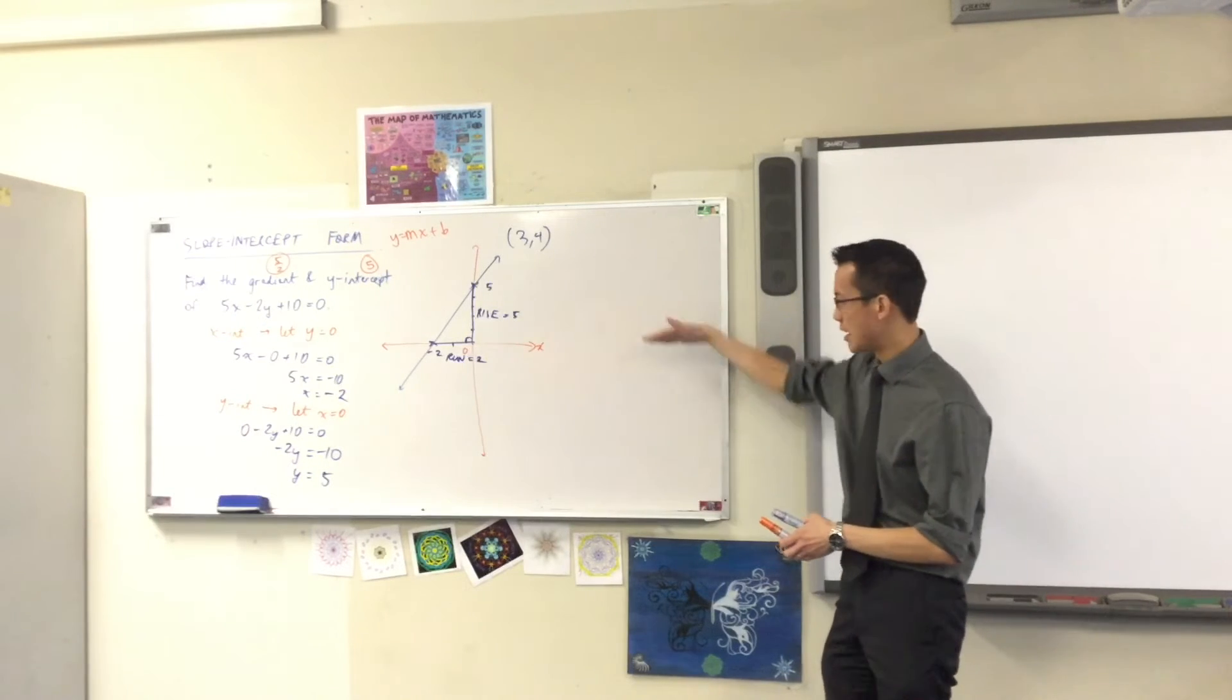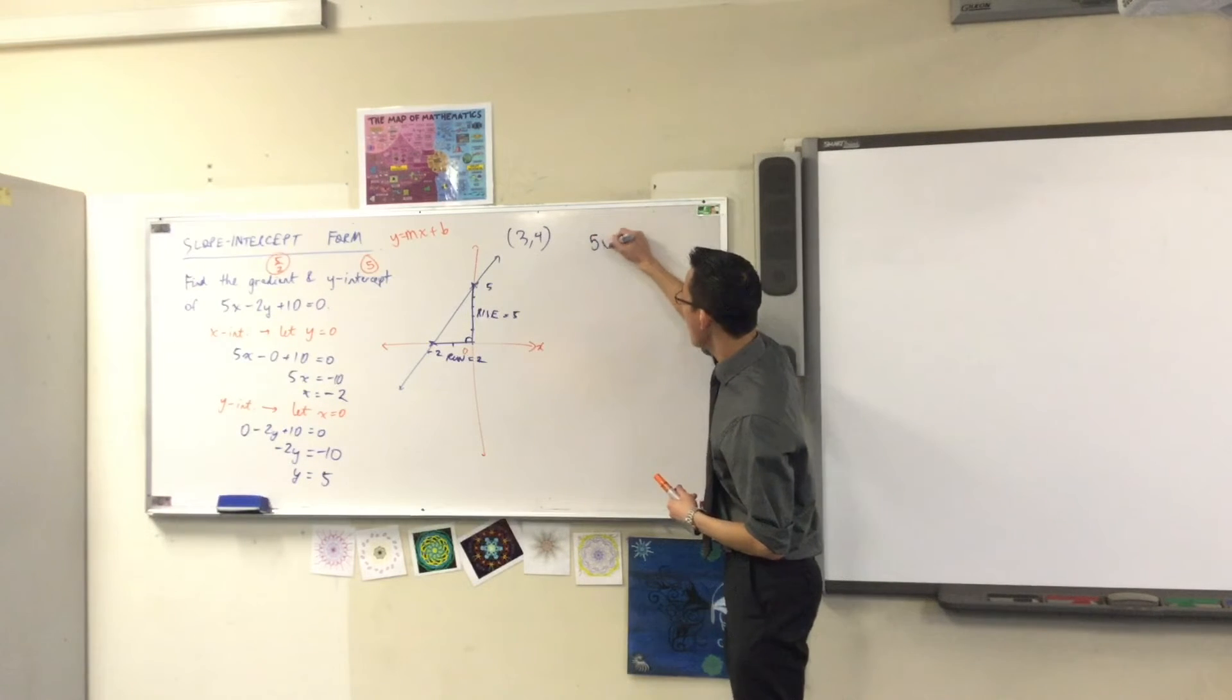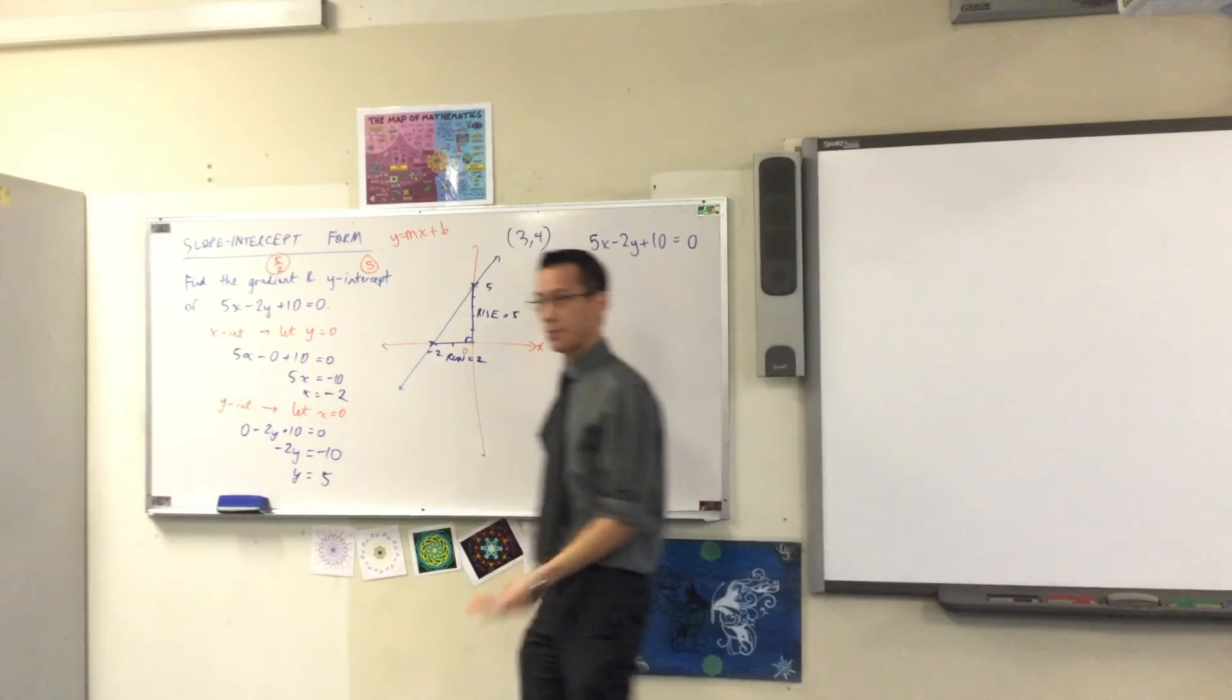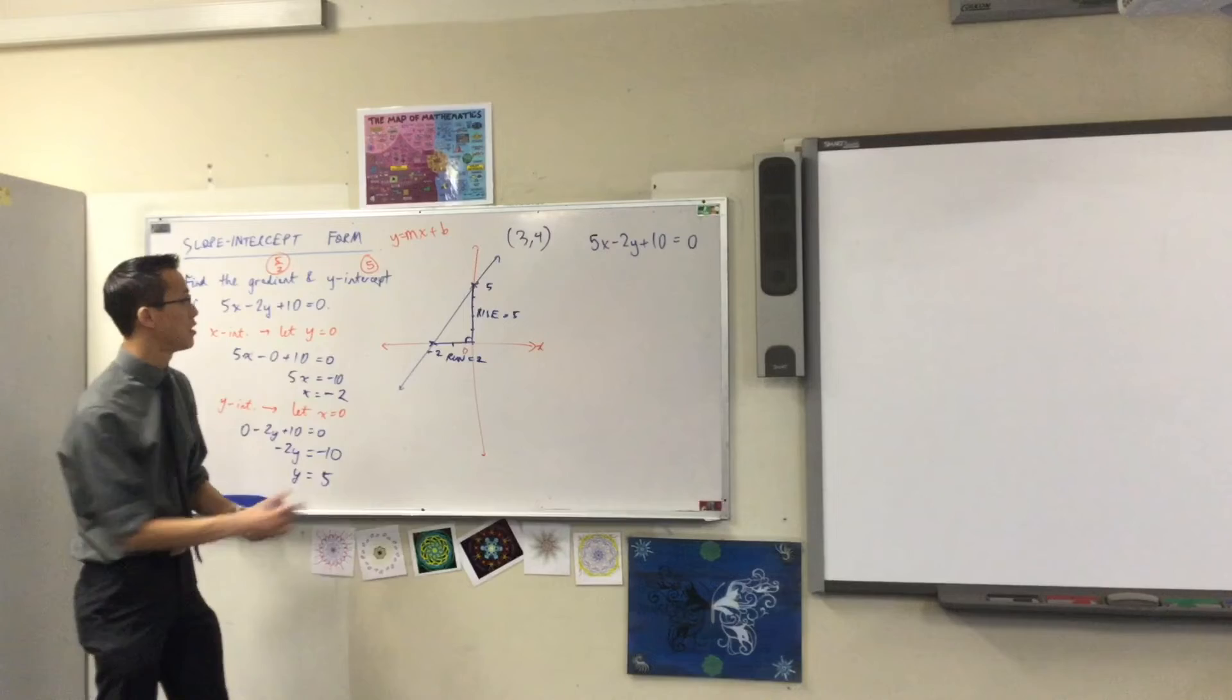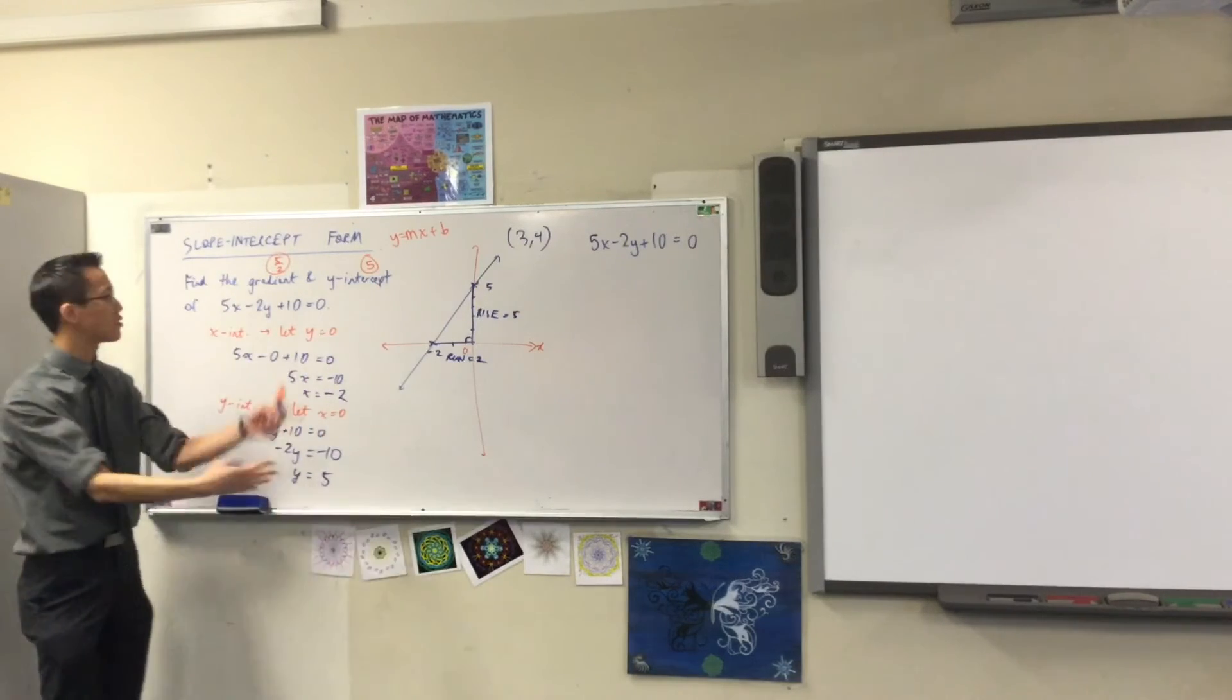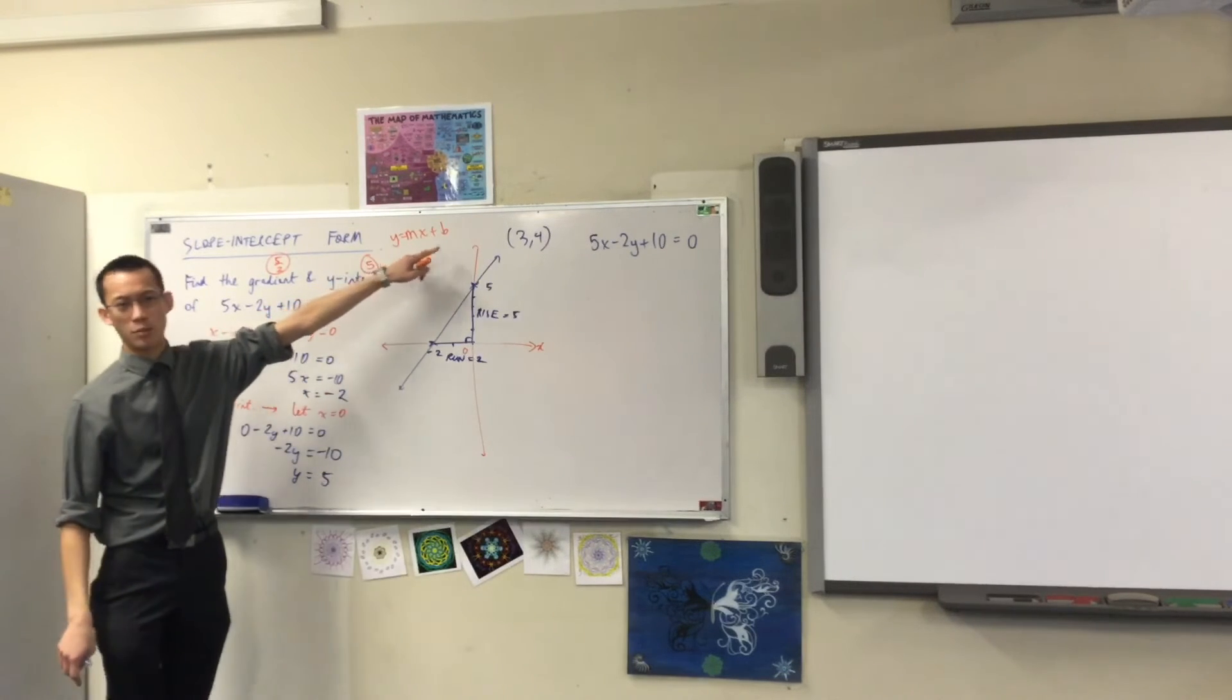So, now, just over here or underneath if you're still writing, I'm going to start with that equation. Okay? 5x minus 2y plus 10 equals 0. And my job now is to rearrange this equation so it looks like this. This form will just tell me straight away what the gradient of y-intercepts are.